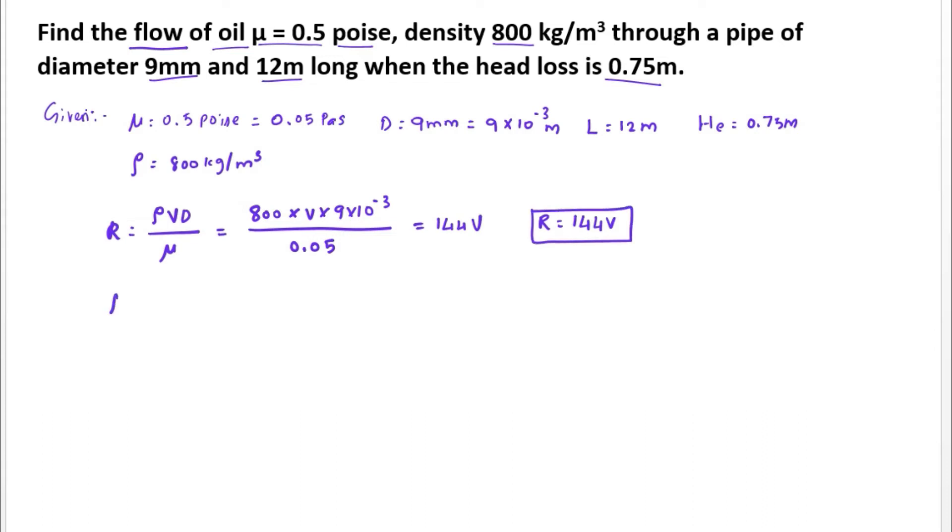Now friction factor f equals 64 divided by R. We substitute the R value, so f equals 64 divided by 144 into V. Solving this, f value equals 0.444 divided by V.